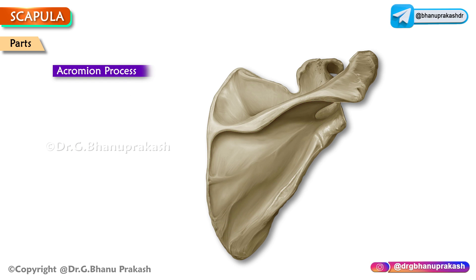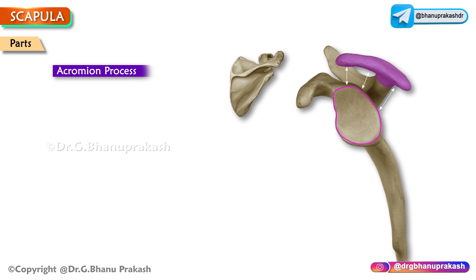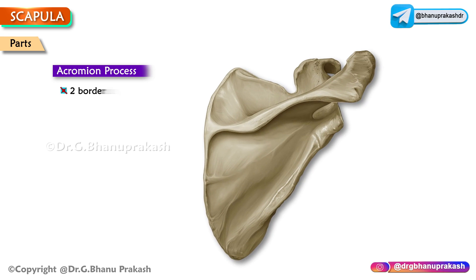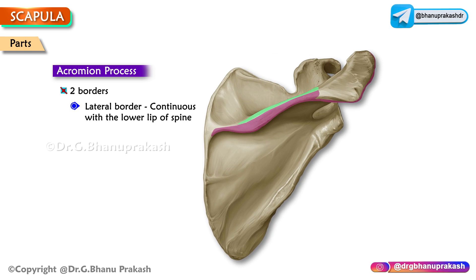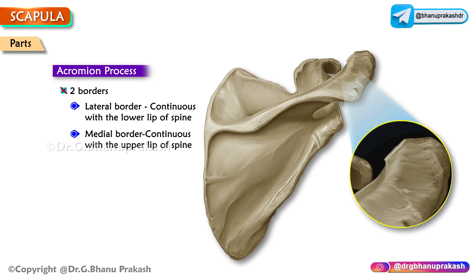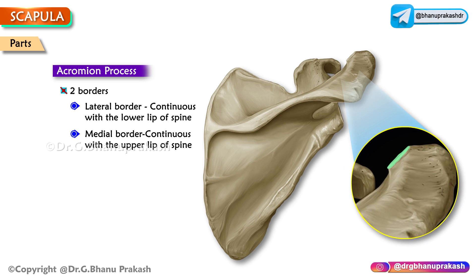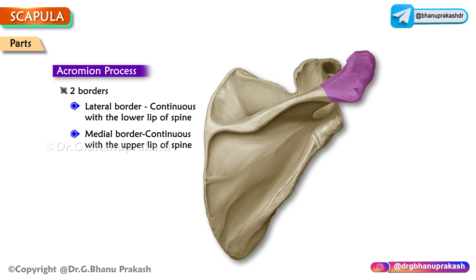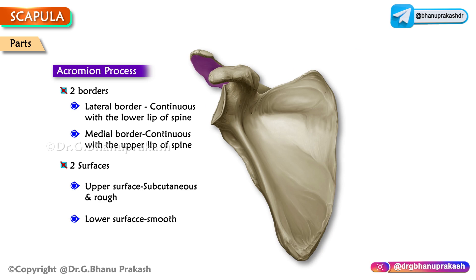The acromion process arises from the lateral end of the spine and projects forwards. It hangs over the glenoid cavity. It has two borders and two surfaces. The lateral border is continuous with the lower lip of the crest of the spine. The medial border is continuous with the upper lip of the crest of the spine and presents an oval facet for articulation with the clavicle. The upper surface is subcutaneous and rough; the lower surface is smooth.